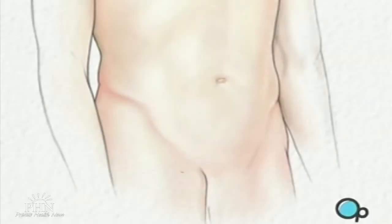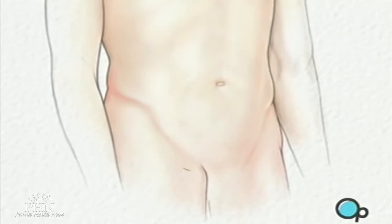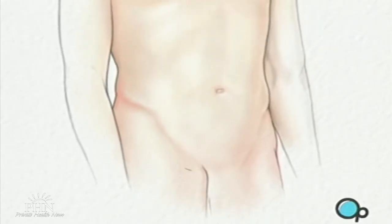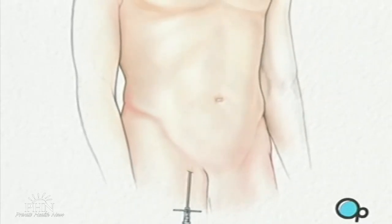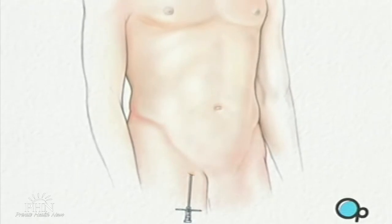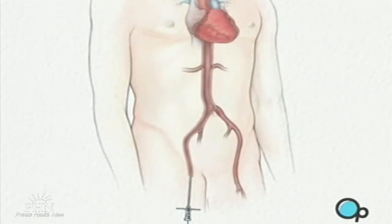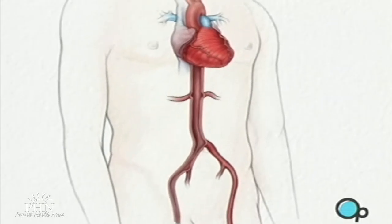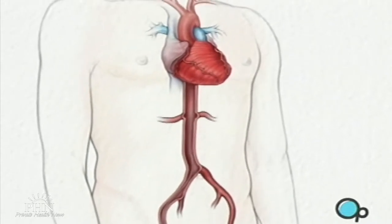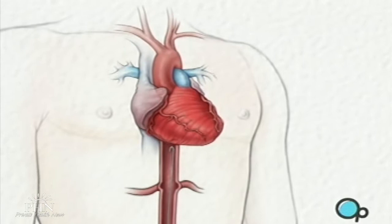Then the doctor will make a small cut over the femoral artery in the upper part of the leg. A special needle is then inserted into the artery itself. Then a guide wire is carefully passed through the needle and gently pushed into the artery and upwards towards your chest.